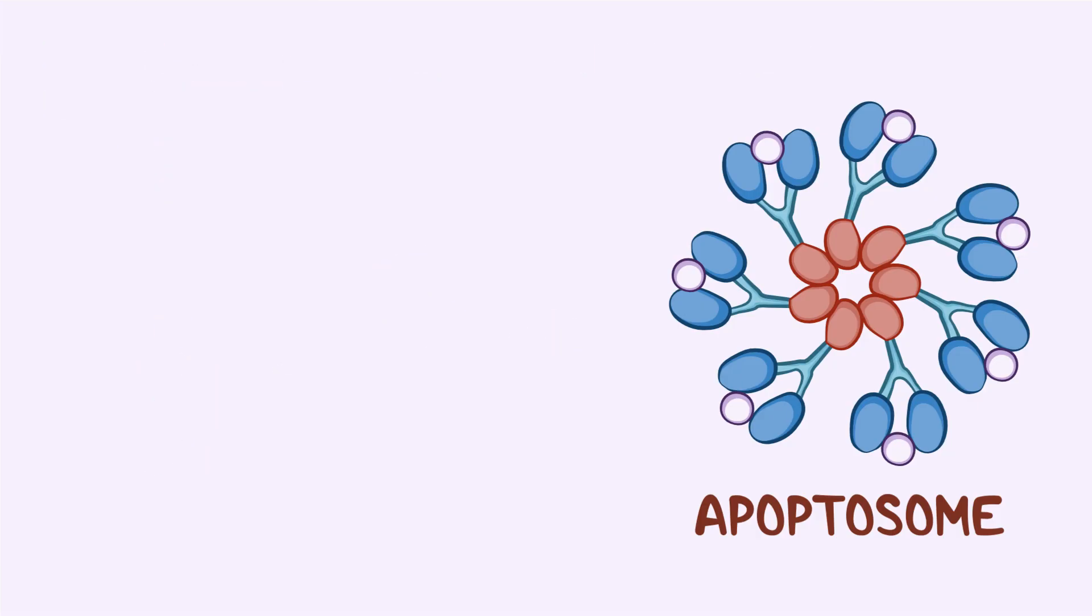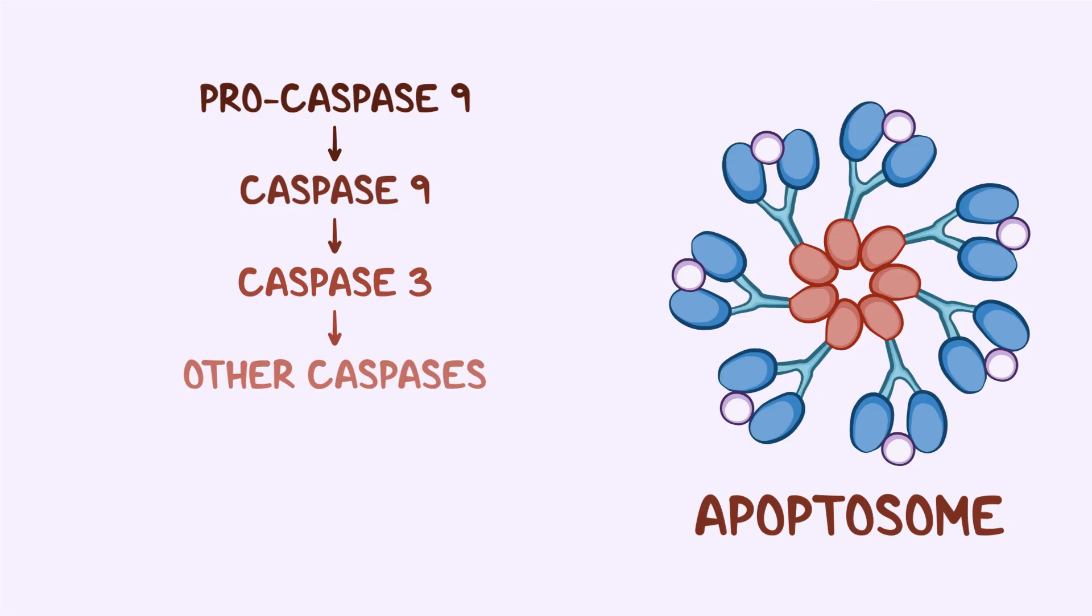The APAF-1 portion of the apoptosome then cleaves an enzyme called procaspase-9 into its active form, caspase-9. Caspase-9 then goes on to activate caspase-3, and caspase-3 goes on to activate other caspases, like a chain event. Eventually, this caspase cascade leads a cell to commit apoptosis.